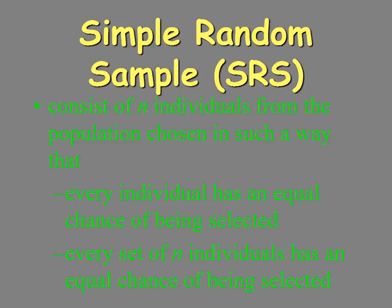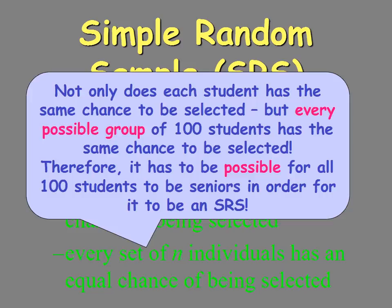Every set of individuals has an equal chance of being selected, so every possible group of 100 students has the same chance of being selected. We also have to understand some limitations of a simple random sample. Since it is random, it's possible that all 100 students chosen from the high school are seniors.